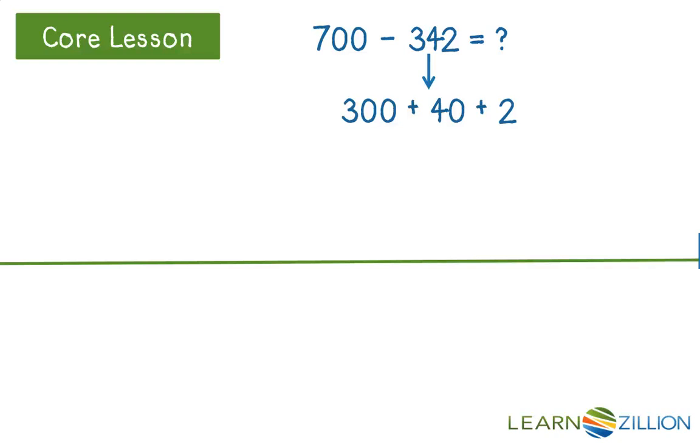So here's my number line, and 700 starts all the way to the right. Because I'm subtracting, I'm going to be jumping backwards.